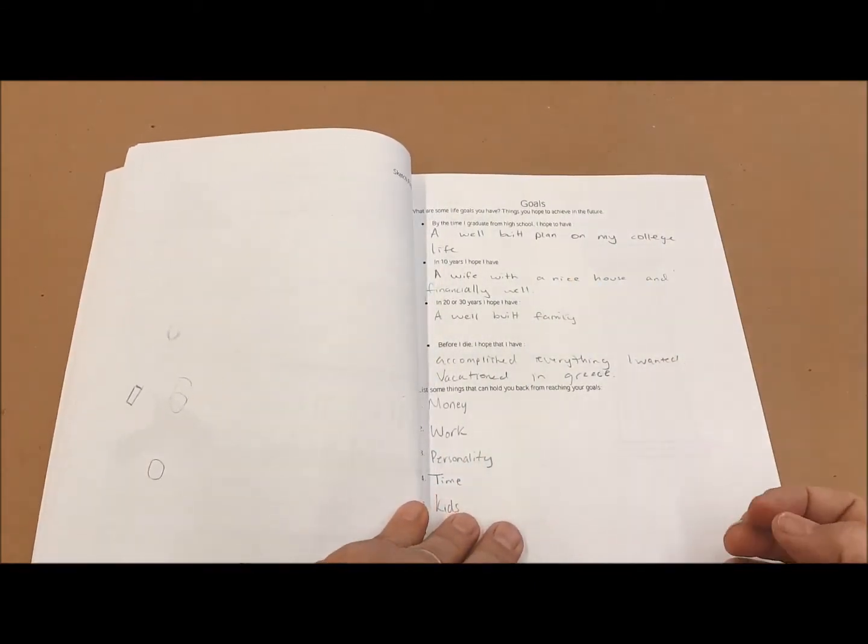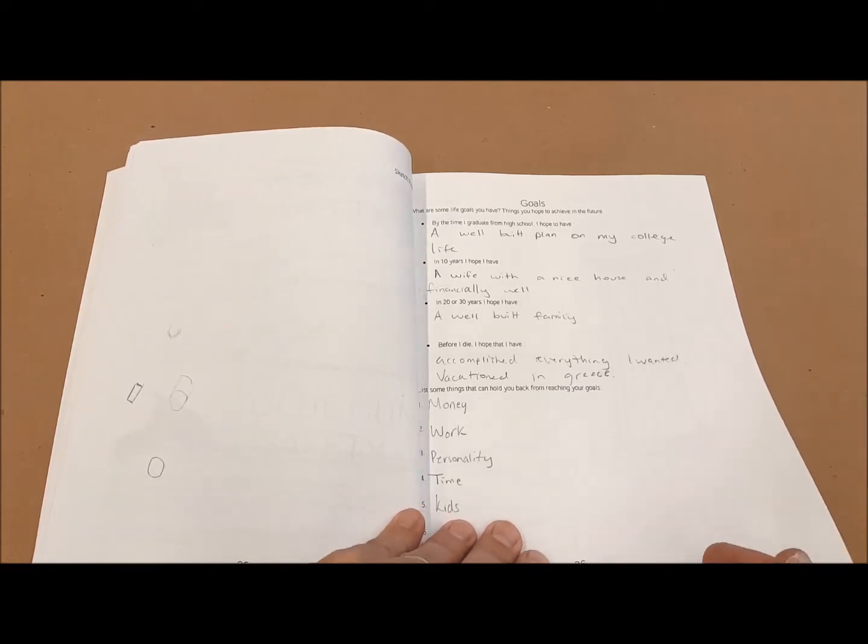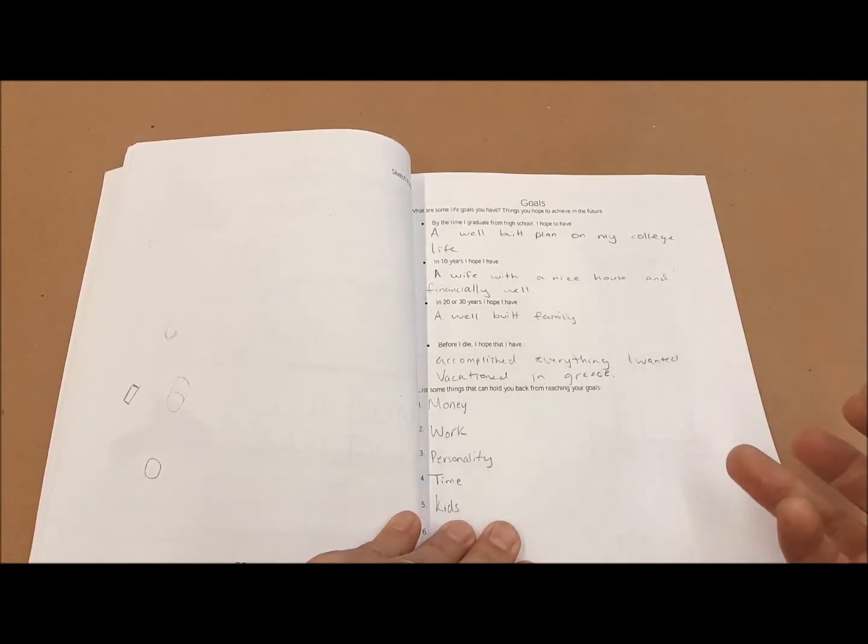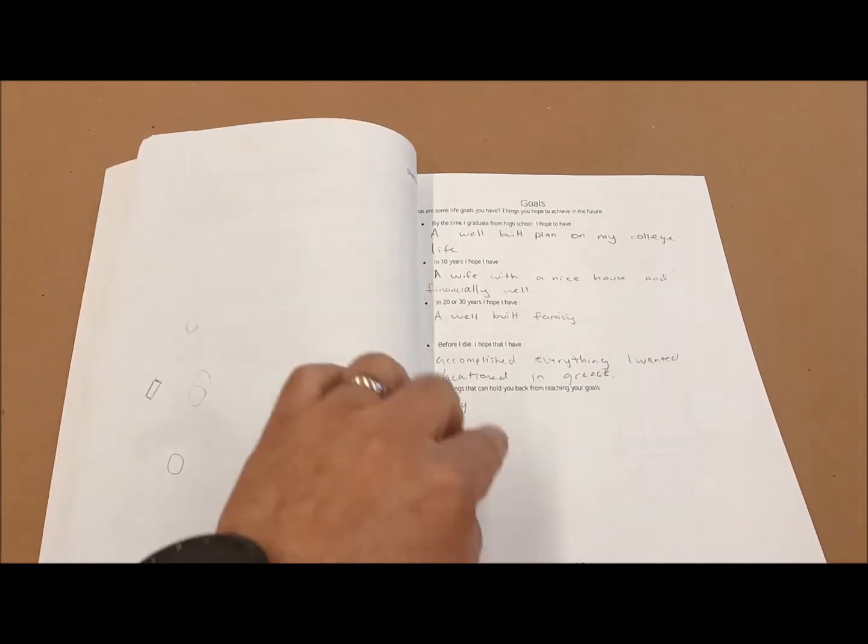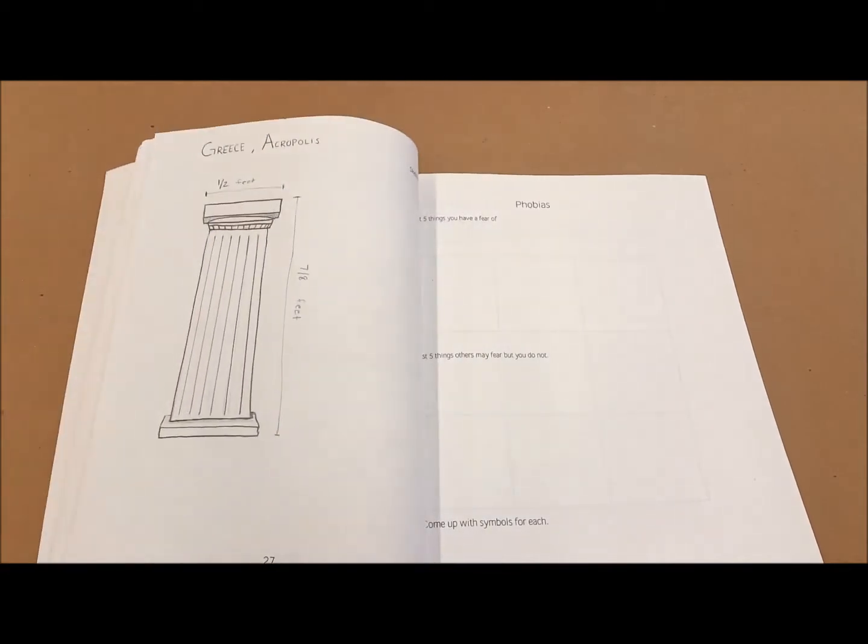A sculpture that was based on a personal goal. We write about what our goals are, what I hope to do by the time I graduate, what I hope in 10 years, what I hope in 20 years, things that could stop you from getting to your goal. And then a sketch.